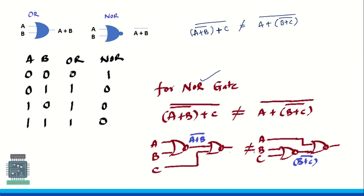I have written the circuit here. Let us see an example with the same inputs: 1, 1, 0 for both circuits. Remember this is a NOR gate. For inputs 1 and 1, the output of NOR gate is 0. So here we get 0. Now taking this 0 and C which is 0 into the NOR gate: for inputs 0 and 0, the output of NOR gate is 1.